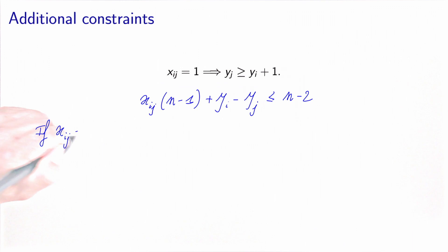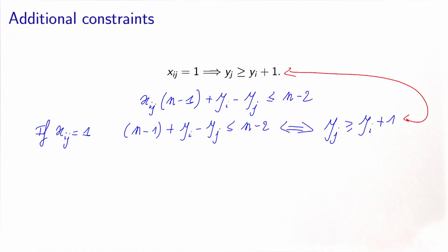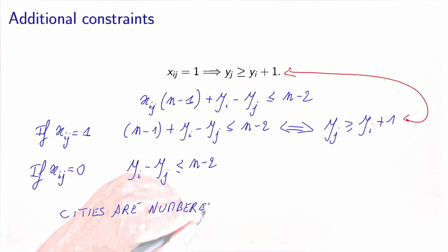Let's verify that it is doing the job. If xij equals 1, so if j is the successor of i in the tour, we get (n-1) + yi - yj ≤ n-2, which is basically yj ≥ yi + 1. That's exactly what we need. And now what happens if xij equals 0? In this case, we have yi - yj ≤ n-2. Well, this is always verified because cities are numbered from 1 to n-1. Indeed, we don't number the home city. Therefore, the biggest difference between the numbers is (n-1) - 1 = n-2. So this constraint is always verified, and we have what we need.